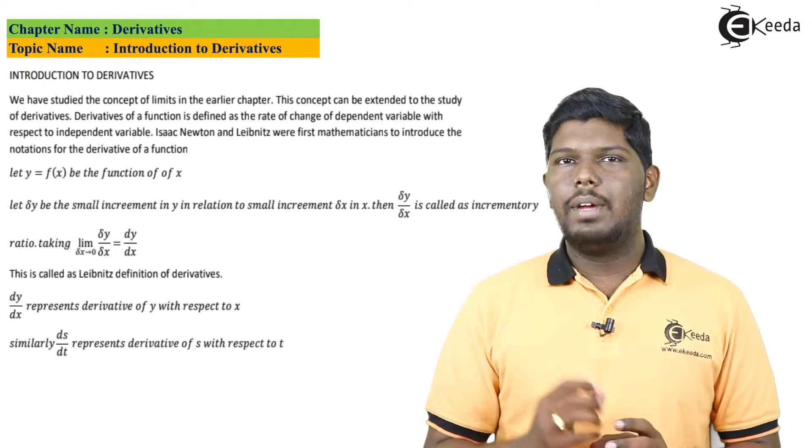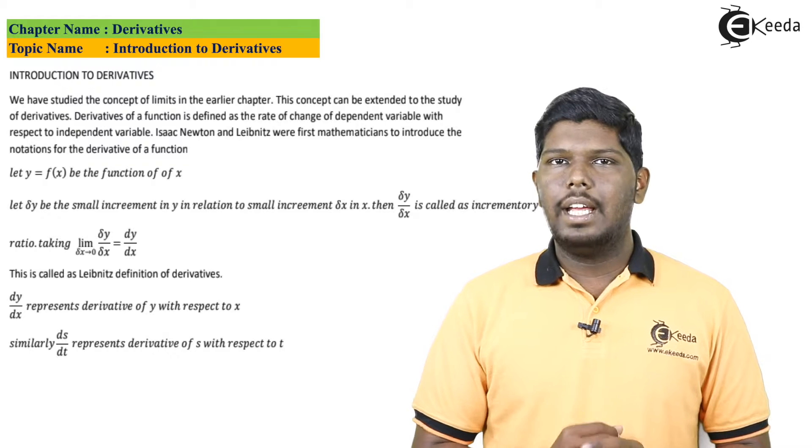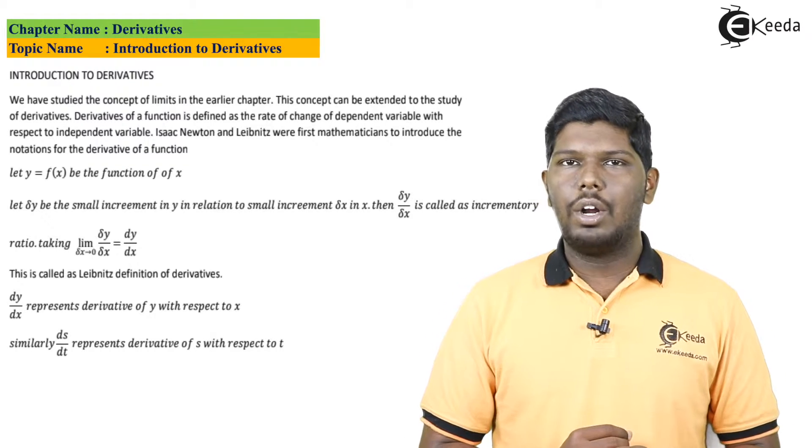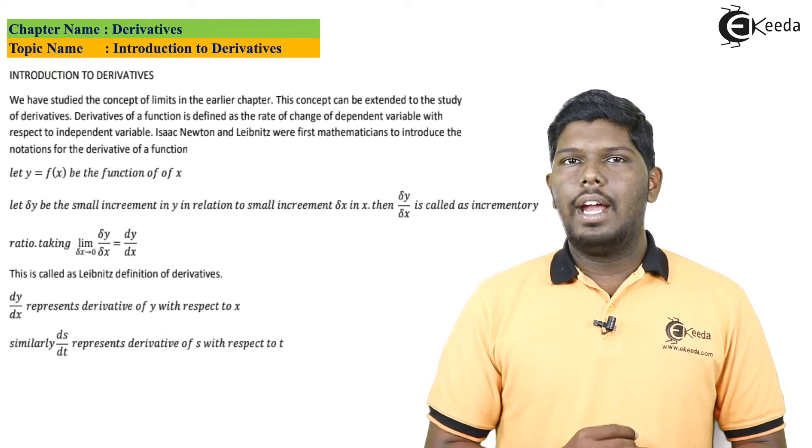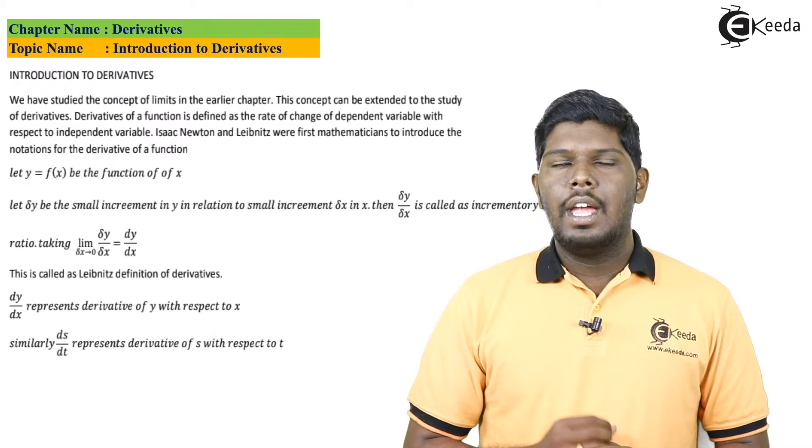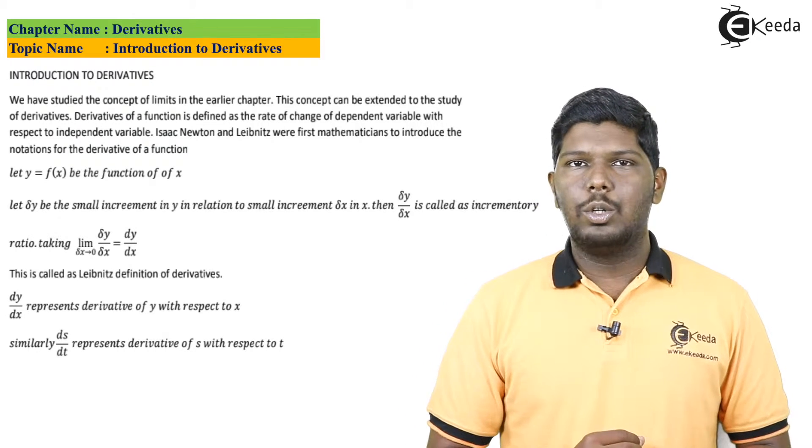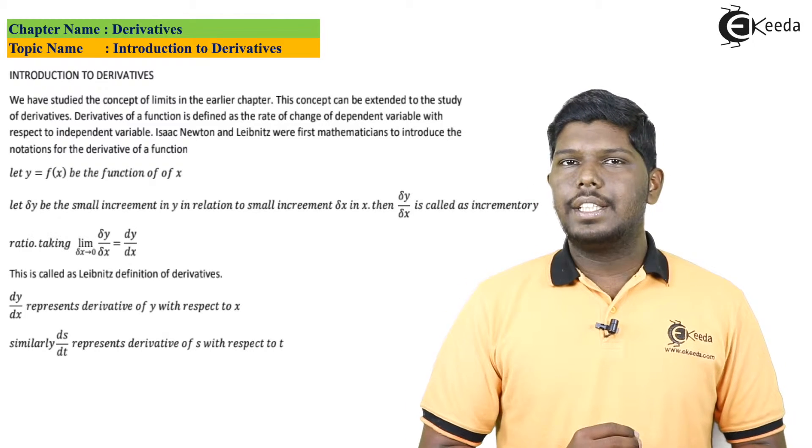Y is changing and at the same time x is also changing, so that change, del y by del x, represents the increment. This increment can be positive or negative, and the ratio obtained by dividing del y and del x is nothing but a rate of change. If this change is very close to zero but not exactly zero, it means the limit is tending to zero. So limit tending to zero of del y by del x is nothing but change in y with respect to x.